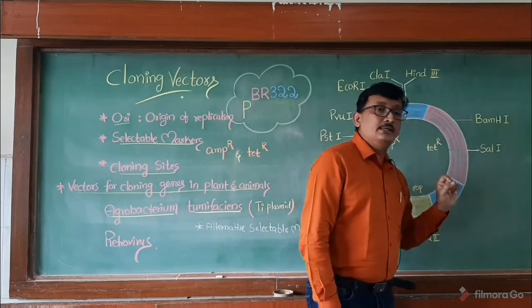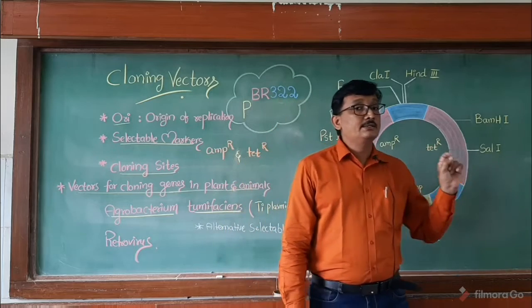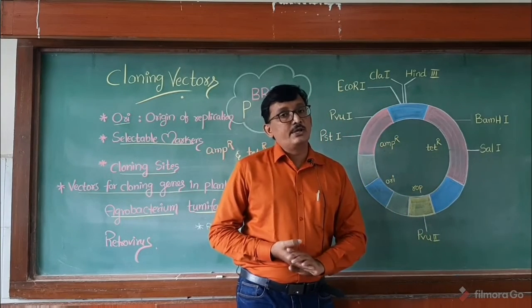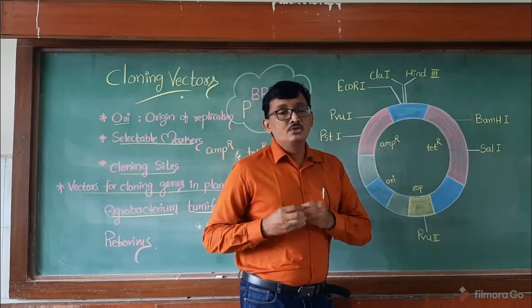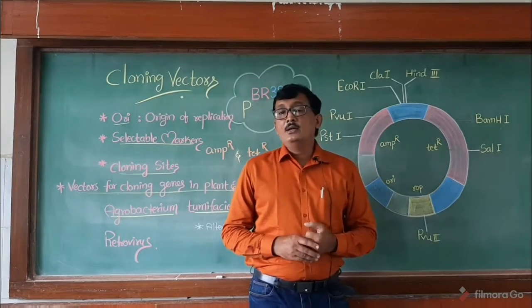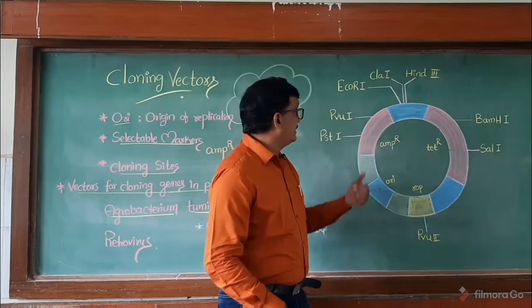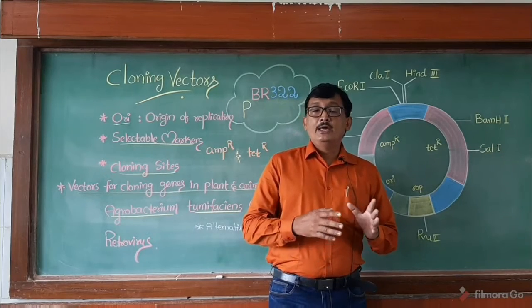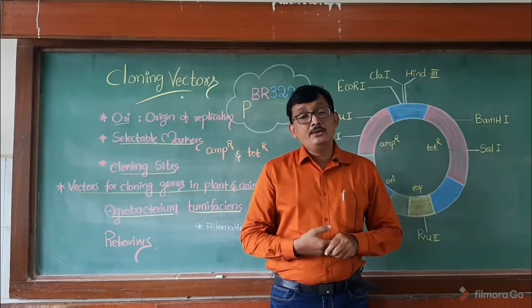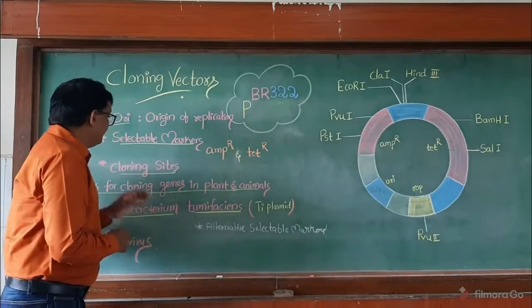Similarly, if we make a cut in the tetracycline resistant gene region and insert a foreign gene there, the tetracycline resistant gene becomes inactivated due to insertional inactivation. So bacteria will not grow in a medium containing tetracycline antibiotic, but the same bacteria will grow and form colonies in ampicillin-containing medium. With this technique we can identify and eliminate non-transformants from transformants and permit the growth of transformants.